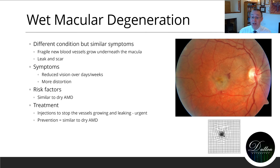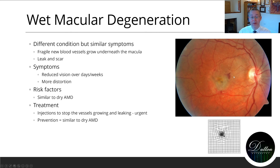But wet macular degeneration actually can be treated if it's caught early enough. An injection is given into the eye itself which will stop the little blood vessels underneath the macula from growing and leaking. It's important to do this as quickly as possible before it starts to scar, because once it's scarred there's not really much you can do about it. So early detection of wet macular degeneration is really important.